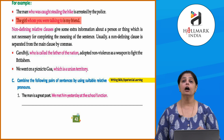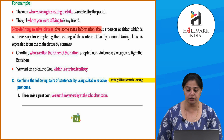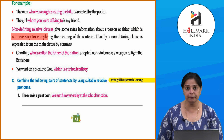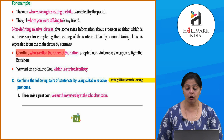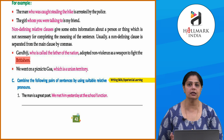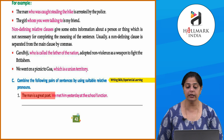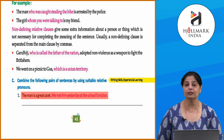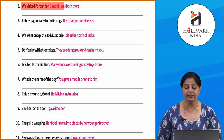Non-defining relative clauses give extra information about a person or thing which is not necessary for completing the meaning of the sentence. Usually a non-defining clause is separated from the main clause by commas. For example: 'Gandhi Ji, who is called the Father of the Nation, adopted non-violence as a weapon to fight the British.' 'We went on a picnic to Goa, which is a union territory.' To combine sentences using relative pronouns: 'The man is a great poet whom we met yesterday at the school function.' 'We visited Porbandar, where Gandhi Ji was born.'